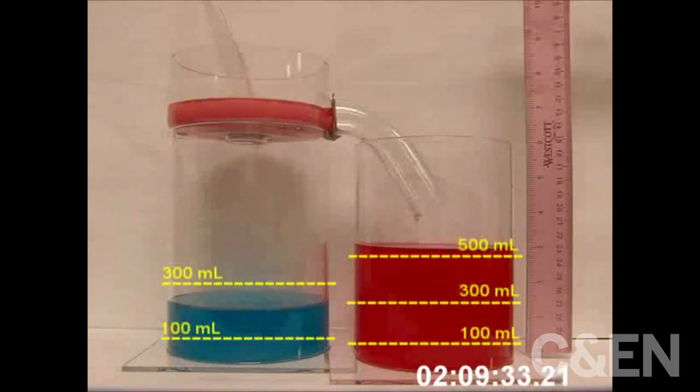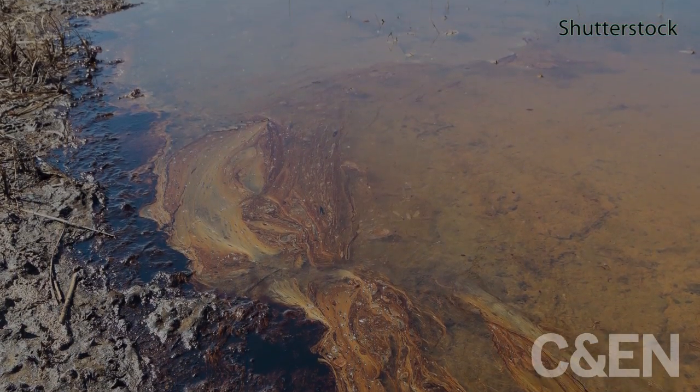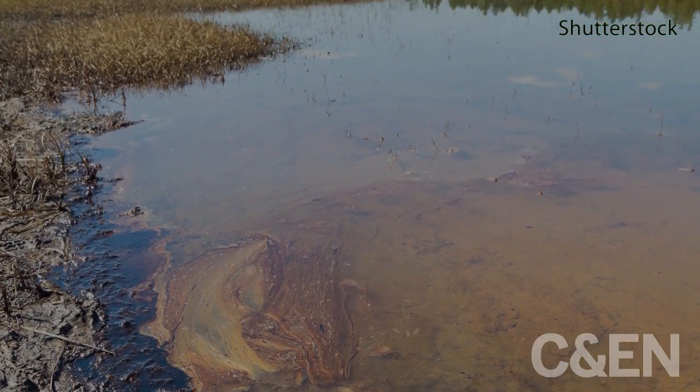This type of continuous system could be used to clean up oil spills by skimming oil from the surface of water in rivers, lakes, or oceans, and then filtering it through the membrane.